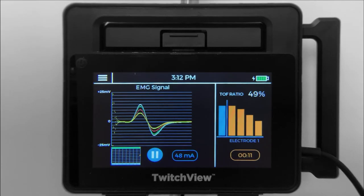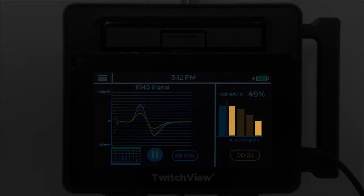After paralytic is administered, you will see pharmacodynamics in action. When four twitches are present, the monitor will measure the TRAIN-4 ratio, or the ratio of T4 to T1.